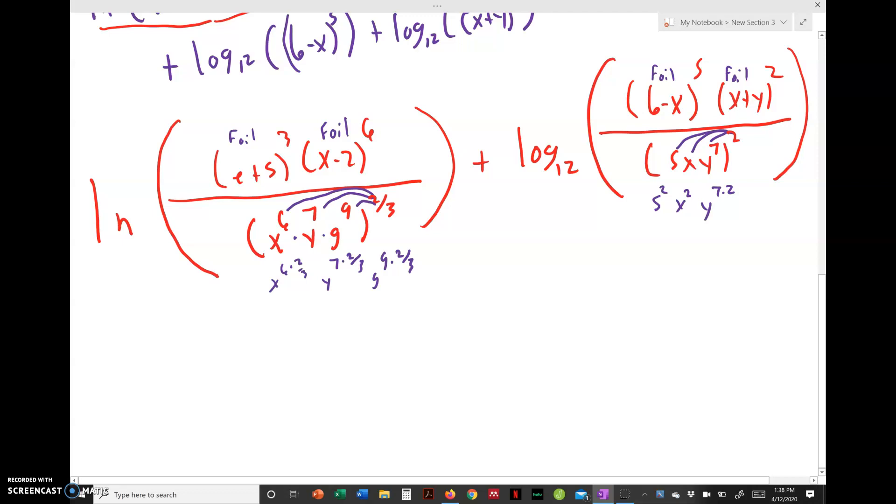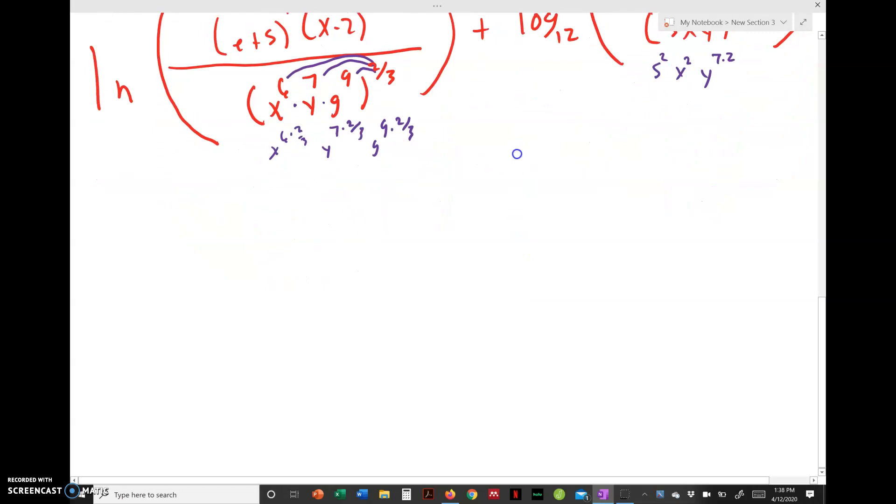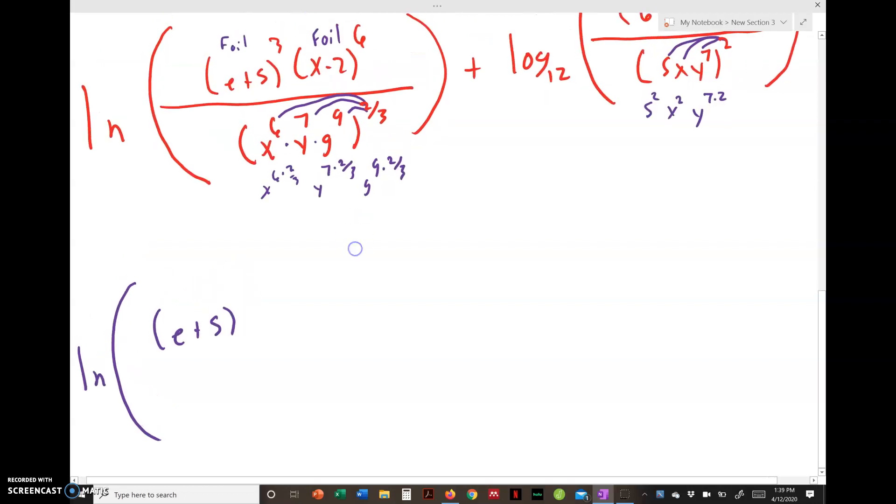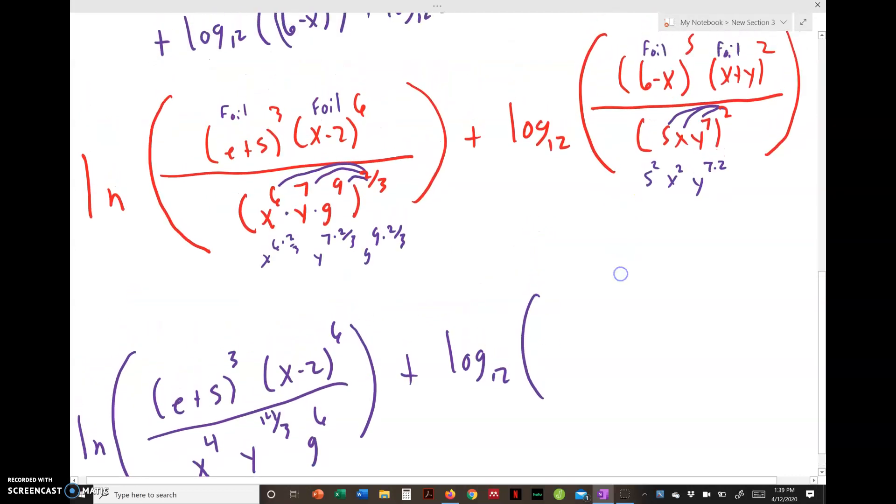So this will now become, we just rewrite over, (e+5)^3, (x-2)^6. So 6 times 2/3, well that's 12/3, so that's 4. So x^4, y^(14/3), g^6, plus log base 12 of [(6-x)^5 × (x+y)^2] / [25 x^2 y^14].